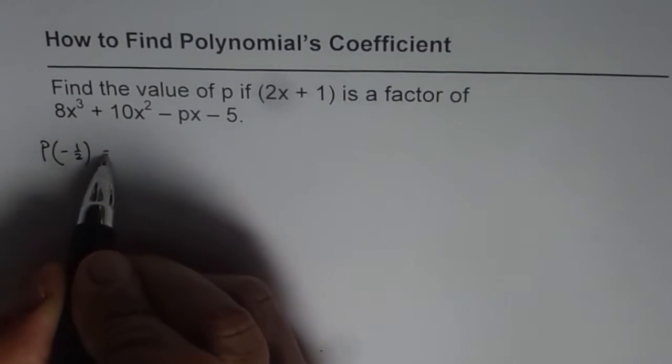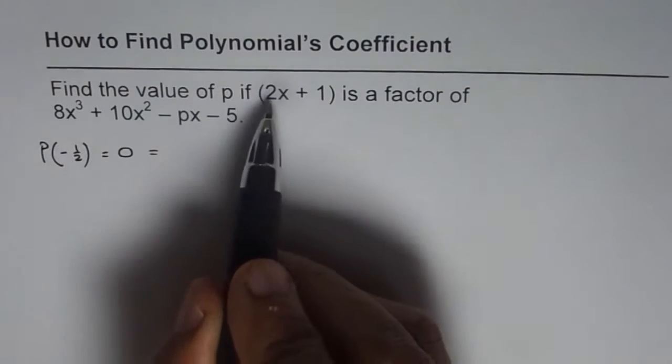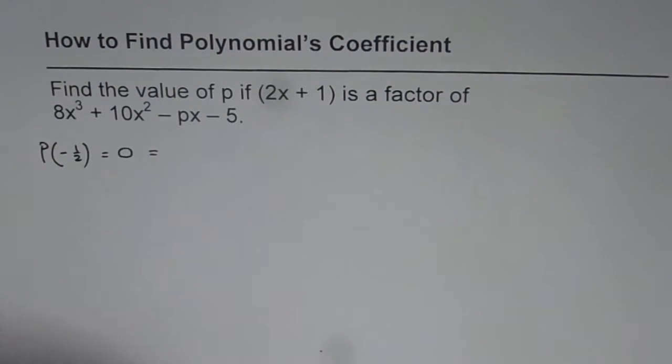This value should be 0. Since 2x plus 1 is a factor of the given polynomial, that is from the factor theorem.